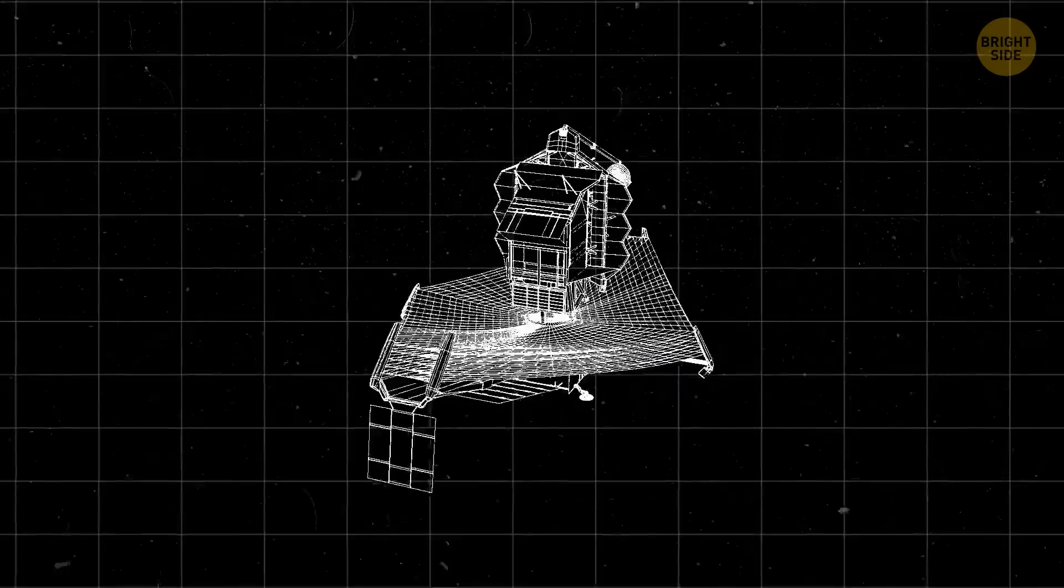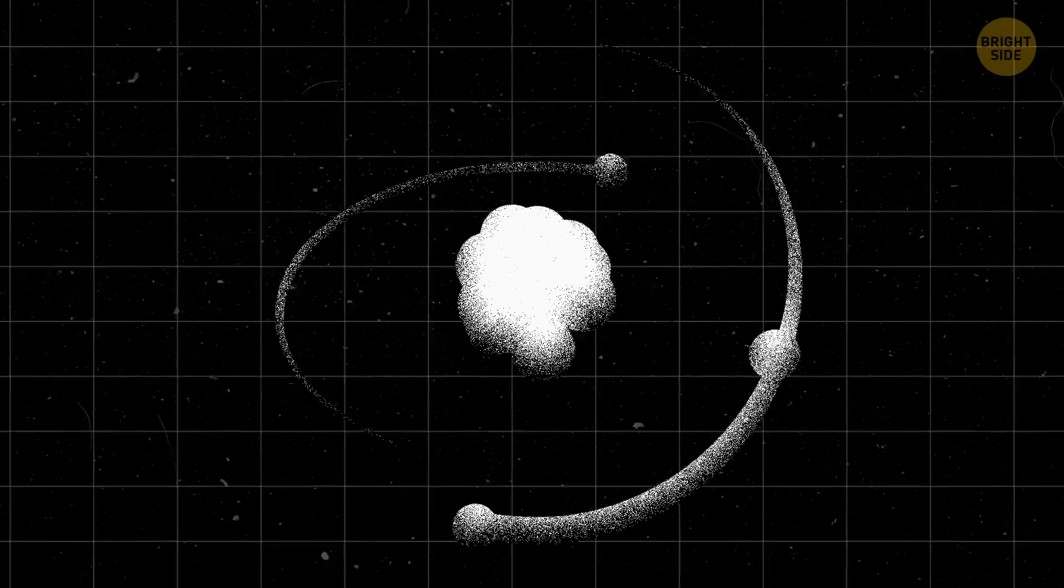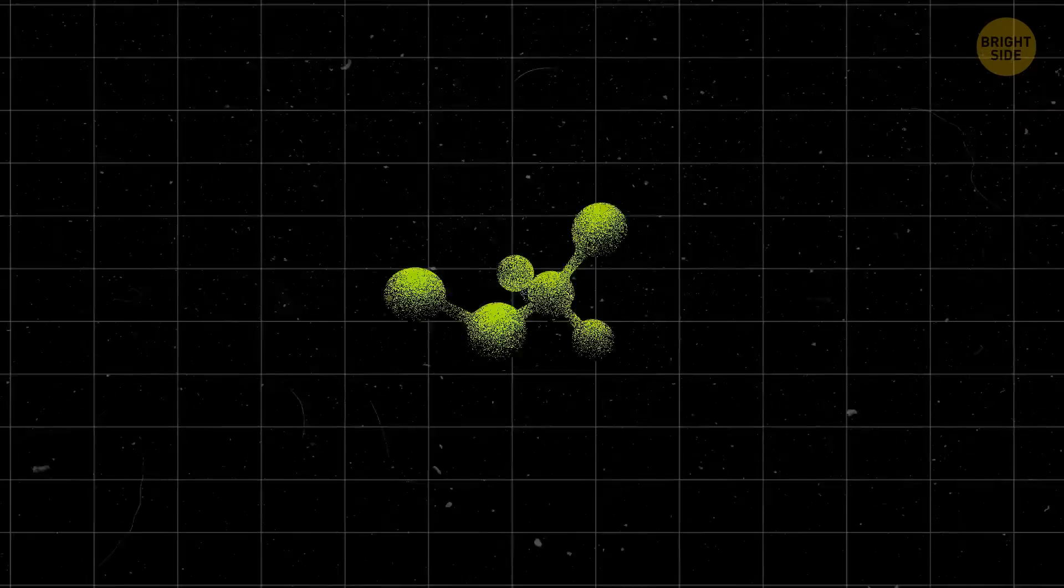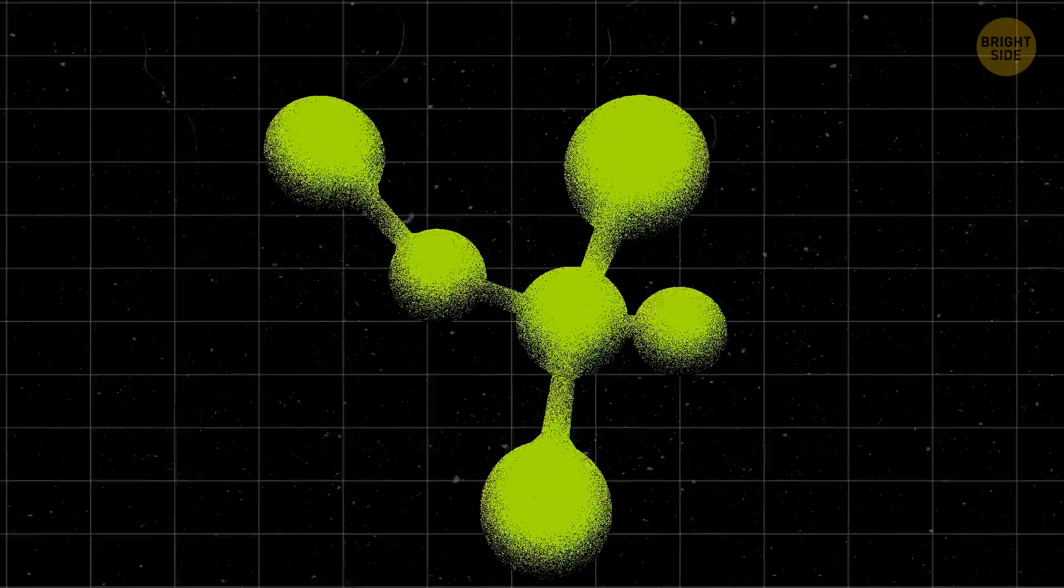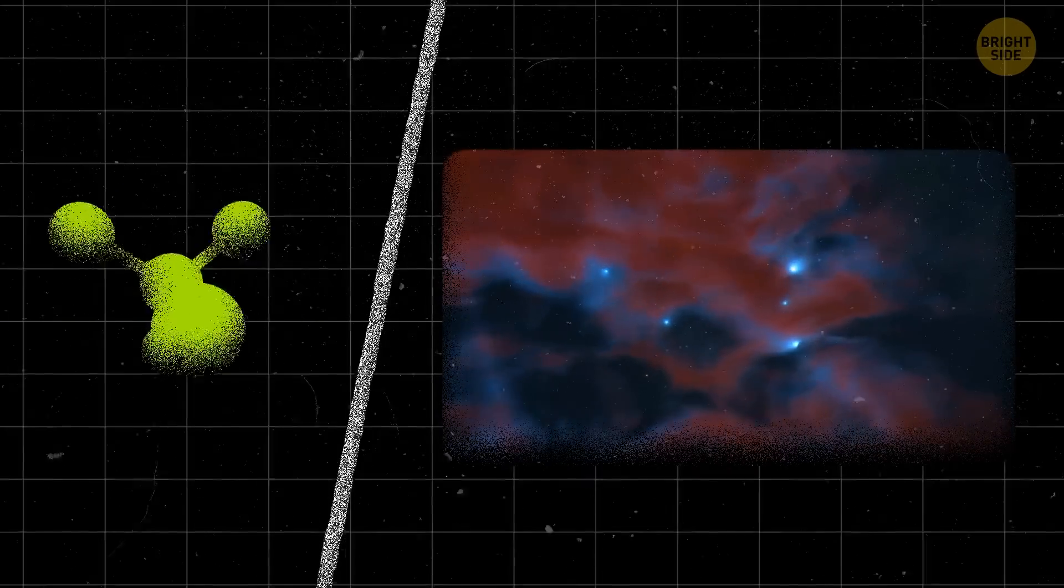And finally, NASA's James Webb Space Telescope has made a great discovery. It detected a crucial carbon compound in space. It's called methylcation. And this tiny molecule, even if it might seem insignificant, could help us unlock the secrets of interstellar organic chemistry.